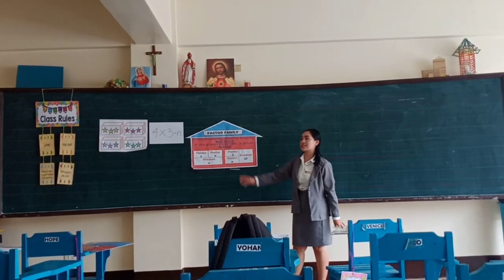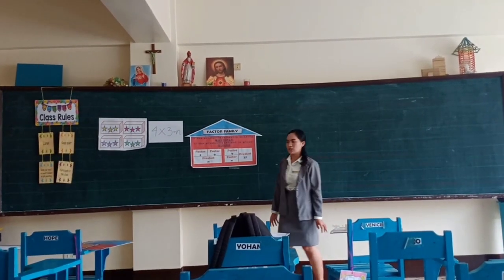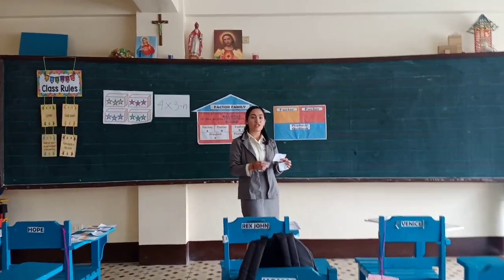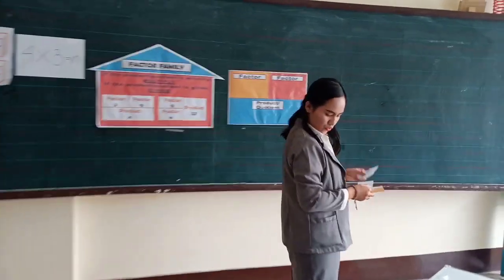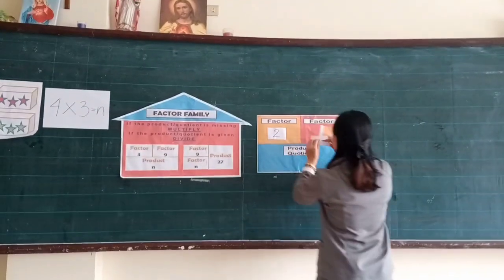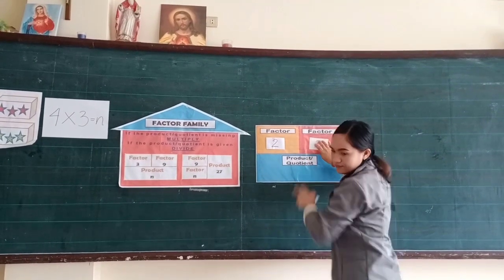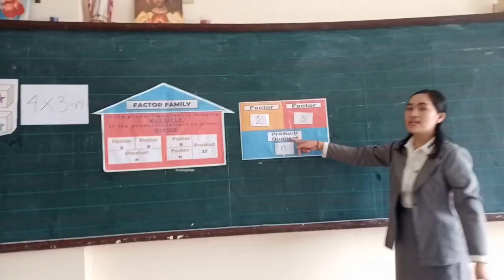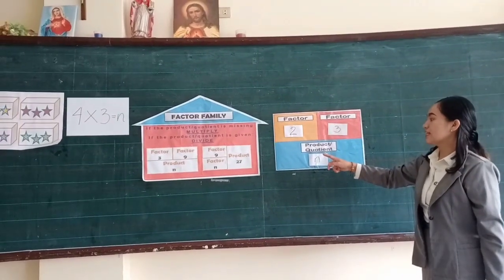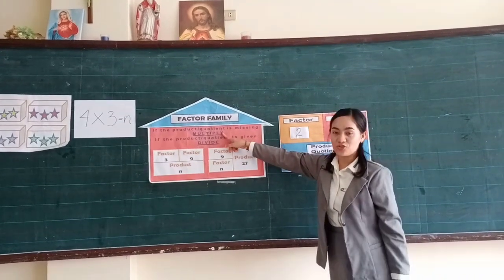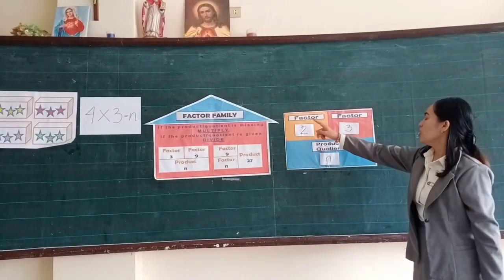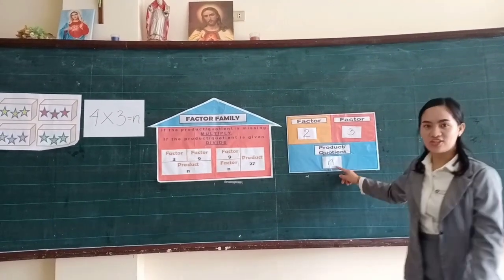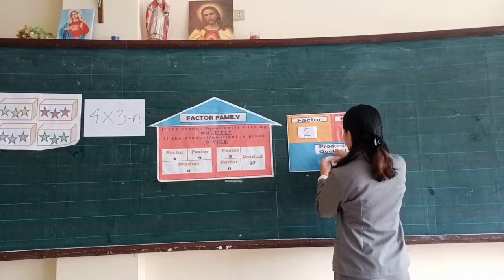So, if the product or quotient is missing, you have to multiply. For example, find the missing value in a number sentence. We have two and three and N. In this example, since the product or the quotient is missing, we have to multiply. Considering these two known numbers, two and three, two times three equals — very good — six. So, the value of this N is six. Two times three is equal to six.